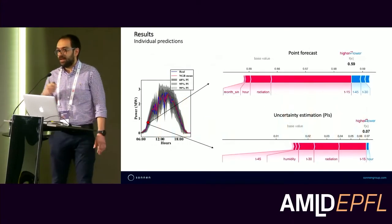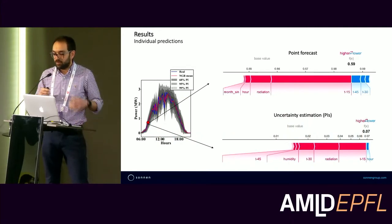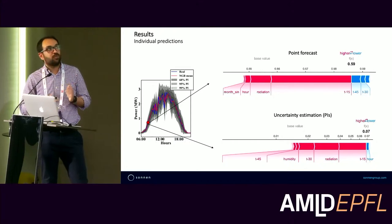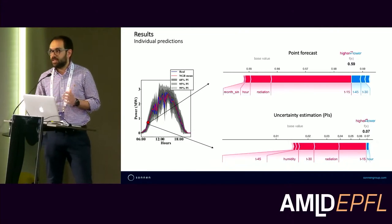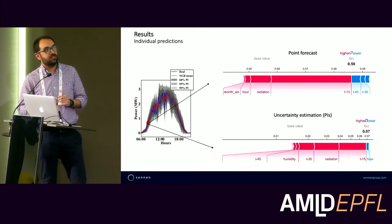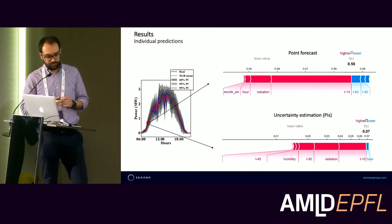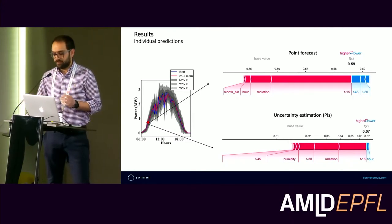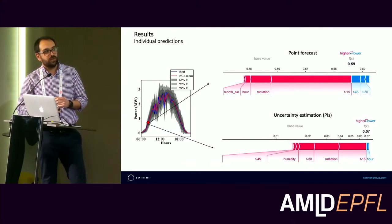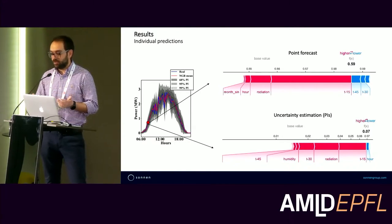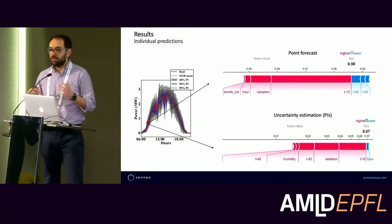More importantly, at each time step we can determine how much each feature contributed to the final result. We can do this for both the point forecast and the prediction interval — the standard deviation of the probability distribution. For example, the power generation 15 minutes before had the greatest influence on the model output and pushed the model output to increase. Similarly, features shown in red push the standard deviation to increase, increasing model uncertainty, whereas information about the hour has a positive effect on the model's confidence.